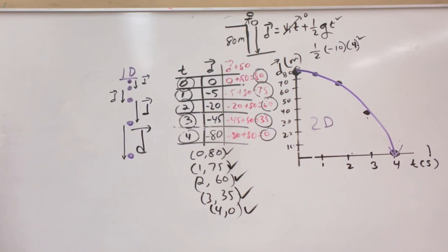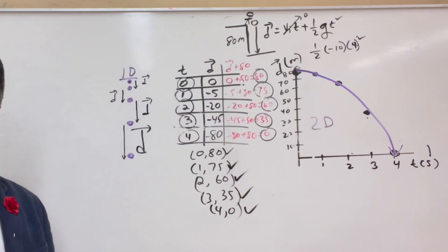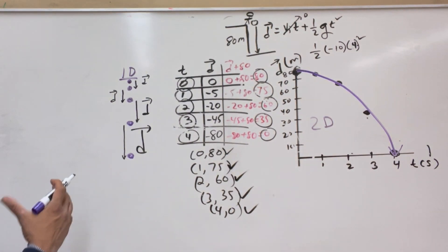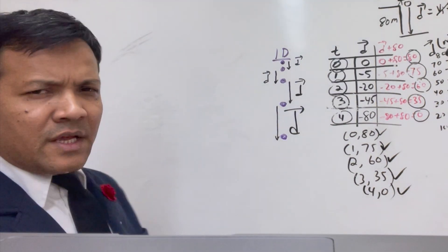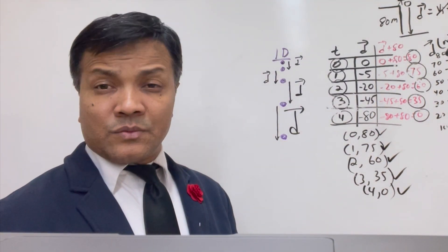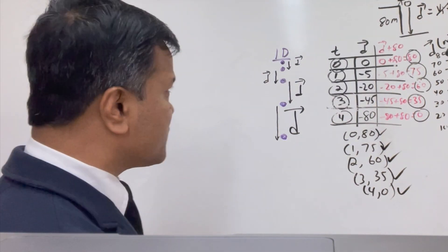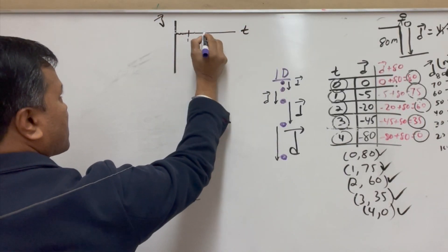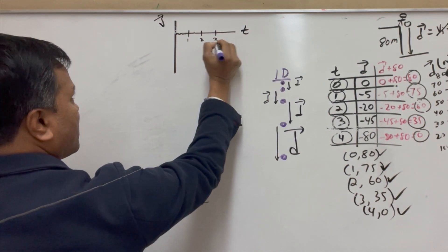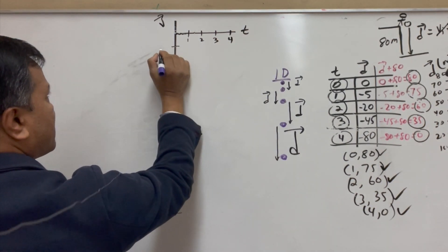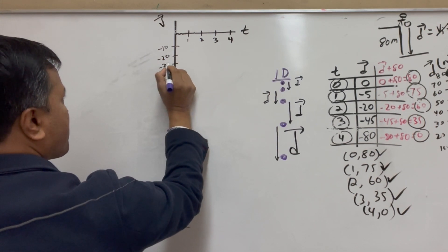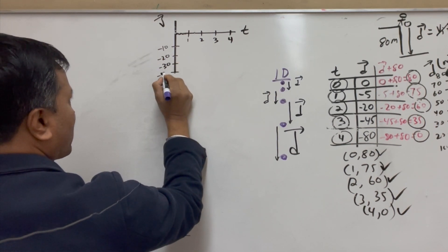Now what I want you to do is the velocity versus time graph. For velocity versus time, you need the points. We have time values 1, 2, 3, and 4, and velocities: negative 10, negative 20, negative 30, and negative 40.